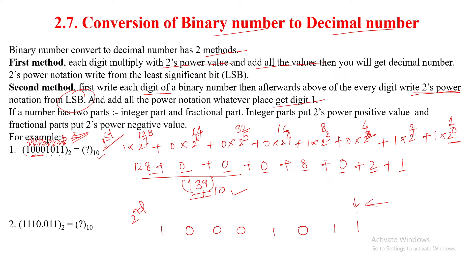Assigning power values above each digit from right to left: 2's power 0 = 1, 2's power 1 = 2, 2's power 2 = 4, 2's power 3 = 8, 2's power 4 = 16, 2's power 5 = 32, 2's power 6 = 64, and 2's power 7 = 128. Now add all the power notation values wherever the digit is 1.